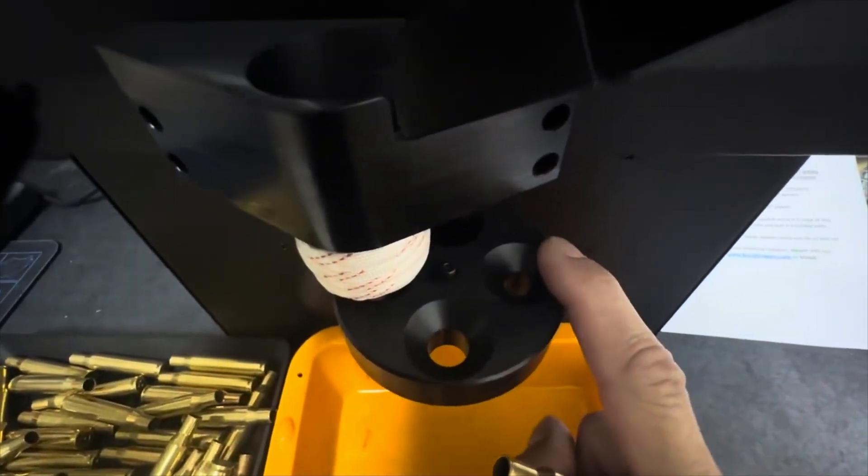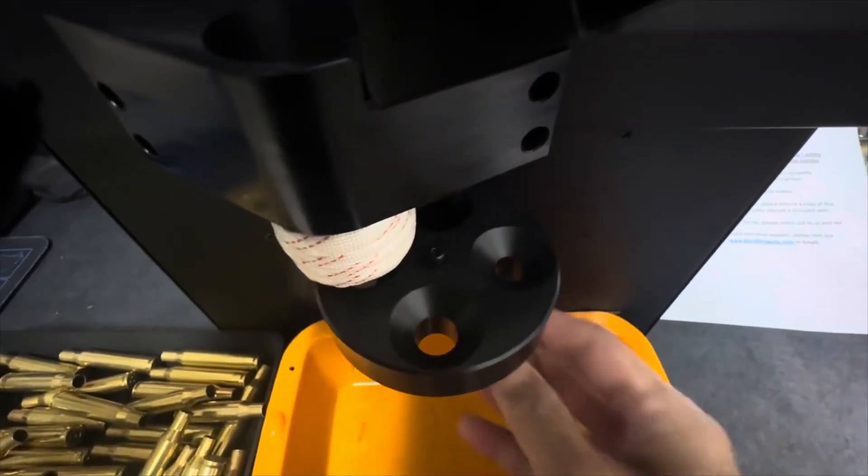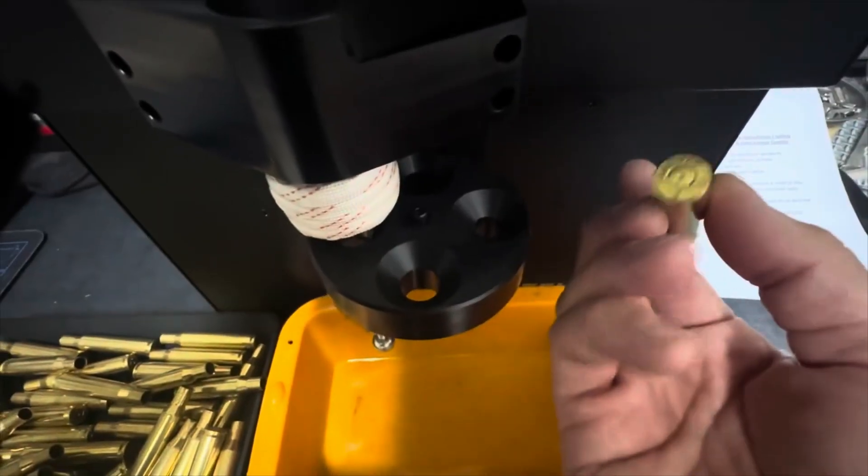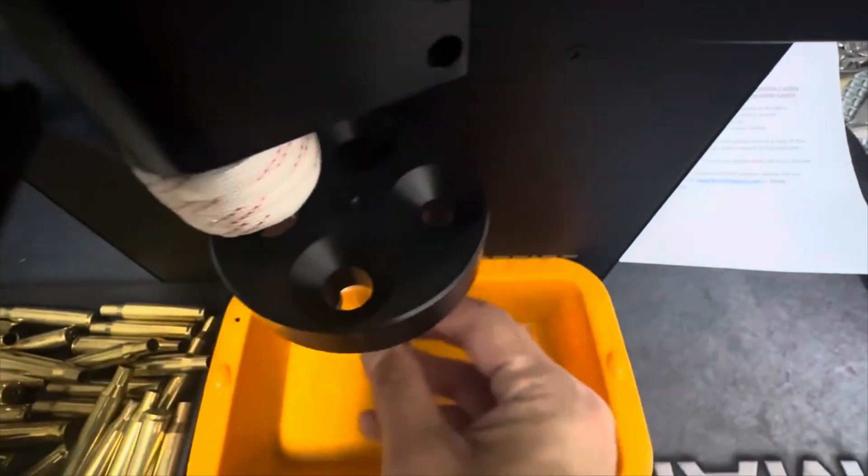Next, we will determine which one of these holes on the multi-caliber disc we will use. So we will start with the smallest one, and this is a 270. This one will not fit.